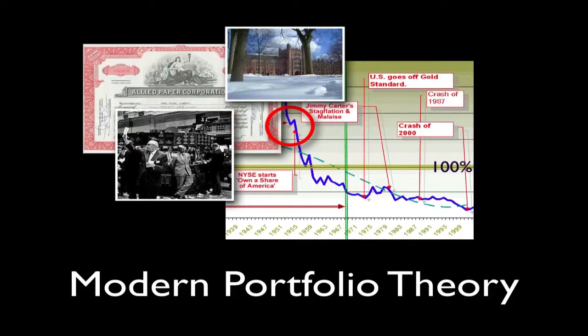Markowitz was followed by other academic economists, some of whom, like him, won the Nobel Prize for their theories. Markowitz became known as the father of modern portfolio theory, which was the dominant basis for investment for the next half century. Dividends played little role in this theory of investments.